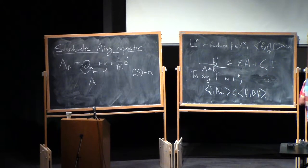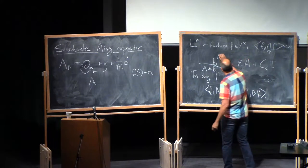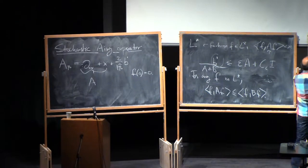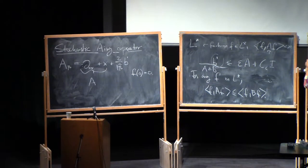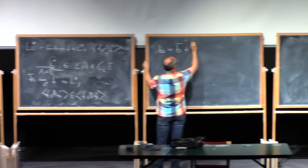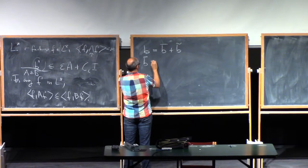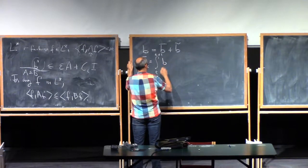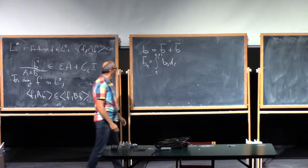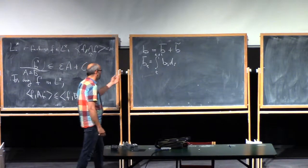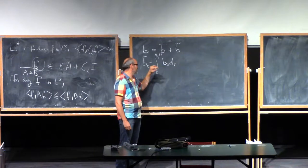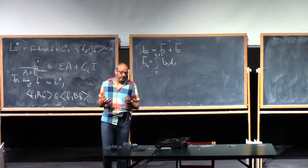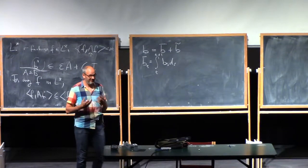The trick was to take this B prime — or the Brownian motion — apart in two pieces. You write it as an average version plus the rest. The average version B-bar(T) is the integral from T to T+1 of B(s) ds. This average version has a derivative which is just the difference B(T+1) − B(T), so it's a perfectly fine function, as opposed to B prime, which is a distribution.